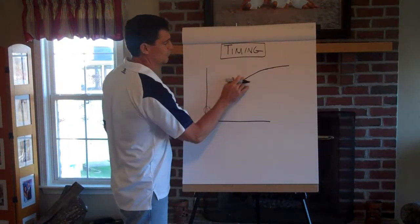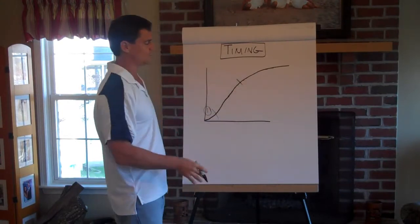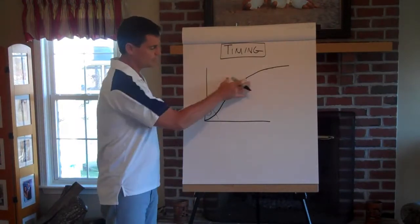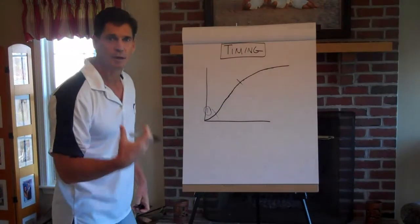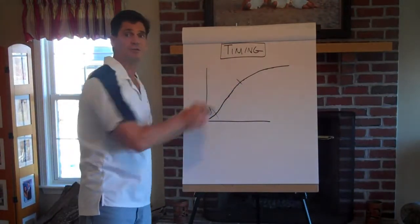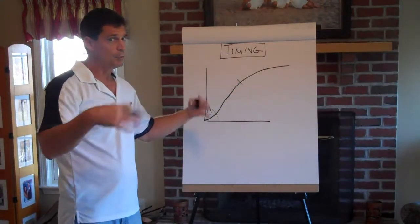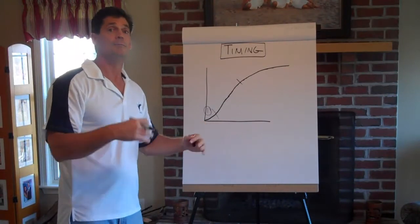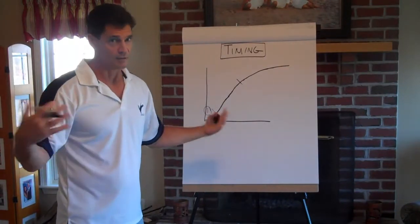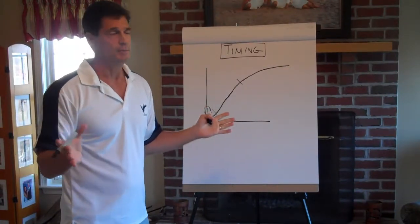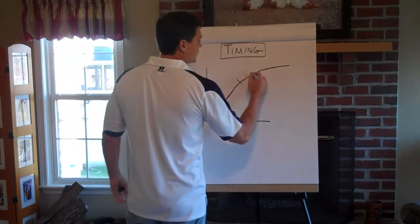And then you have this next level which is essentially the early majority. These are the people that see that the industry is becoming viable and they begin to participate in a big way. The more people who participate in something, the more people who will participate in something. And that's just the nature of people.